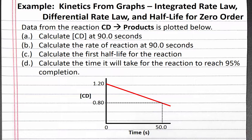Our problem reads: data from the reaction CD produces products is plotted below. For part A, calculate the concentration of CD at 90 seconds. For part B, calculate the rate of reaction at 90 seconds. For part C, calculate the first half-life for the reaction. And for part D, calculate the time it will take for the reaction to reach 95% completion.